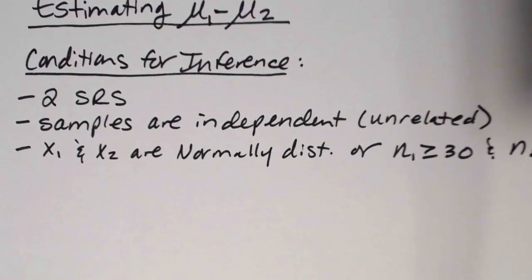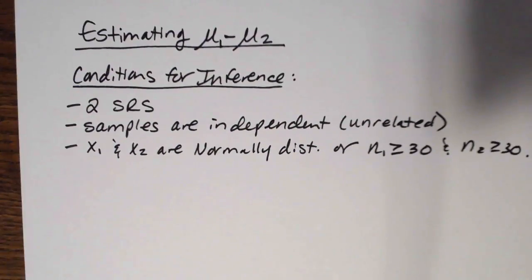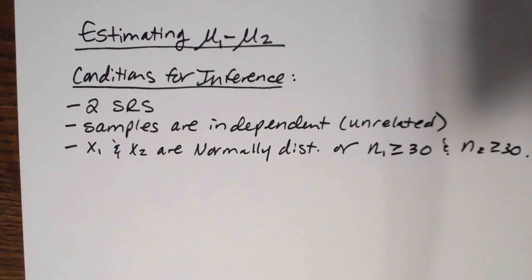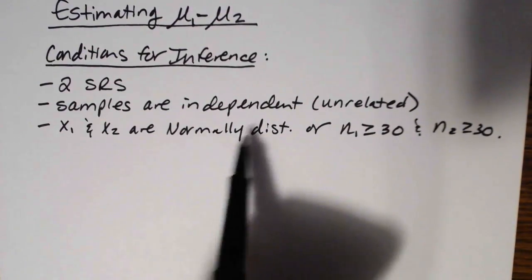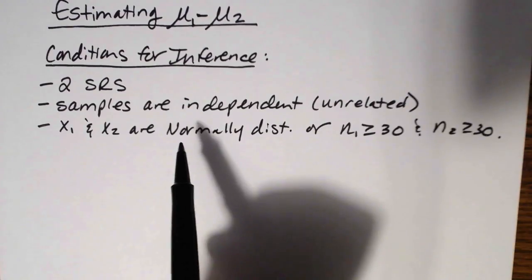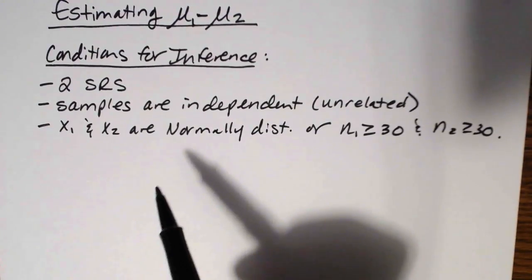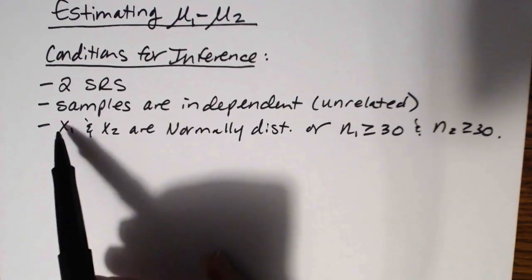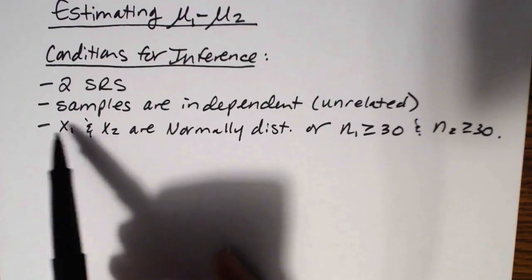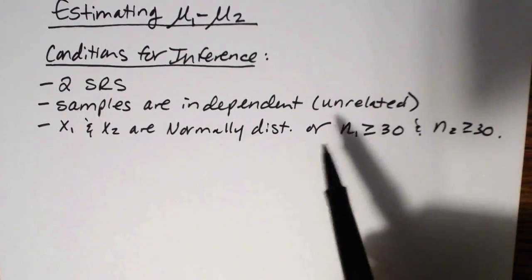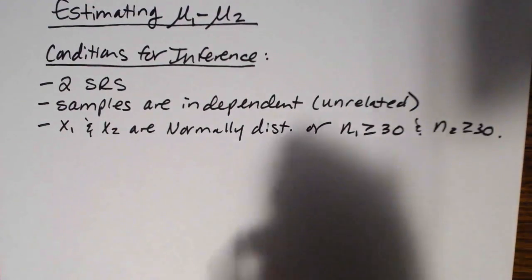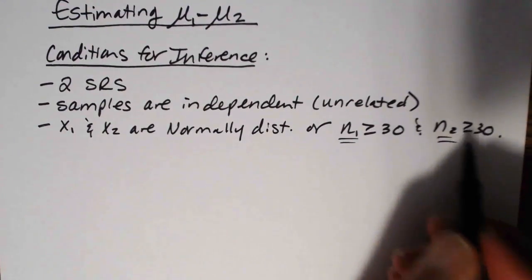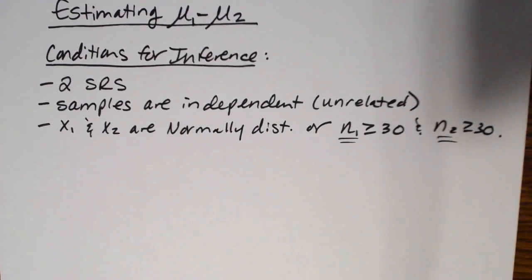It is vitally important that if we're going to use essentially the normal distribution to calculate this confidence interval, we know that the data follow an approximately normal distribution — that the x-bar data will follow an approximately normal distribution. From the central limit theorem we know that's the case if the original data are normally distributed or if we have sample sizes greater than or equal to 30, extended now to both groups.